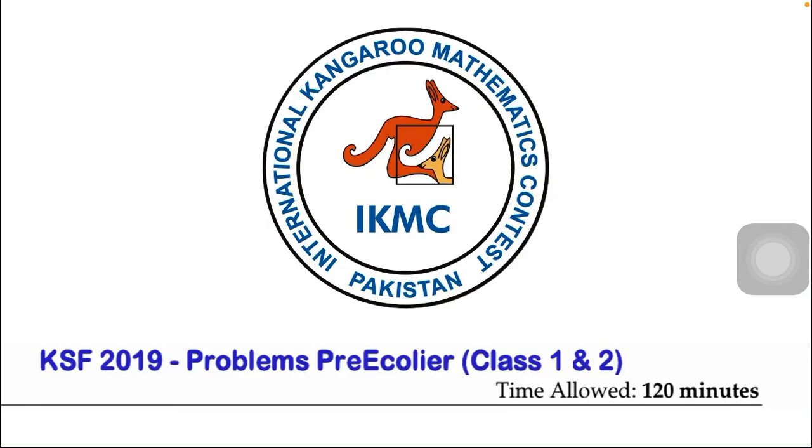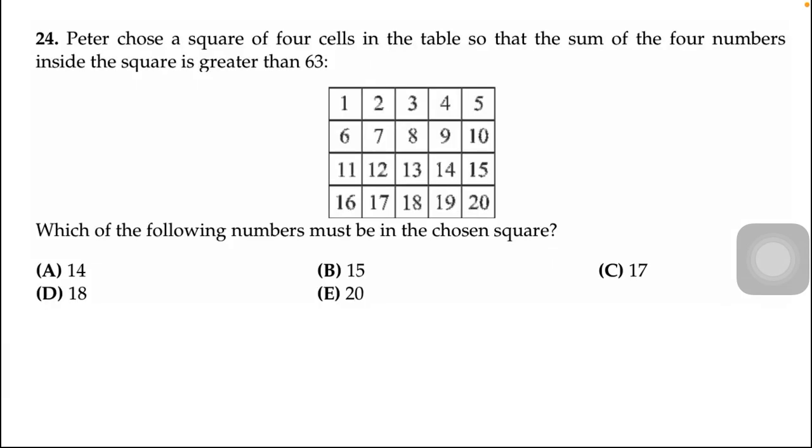This is IKMC International Kangaroo Mathematics Contest and I am solving logic questions for Pre-Ecolier class 1 and 2 of the past paper 2019. Question number 24 is: Peter chose a square of four cells in the table so that the sum of four numbers inside the square is greater than 63.